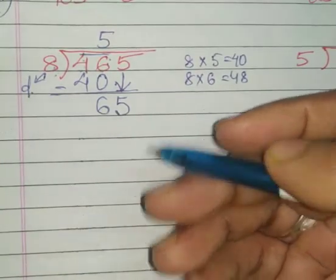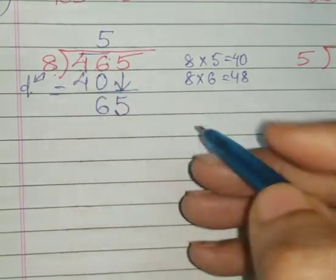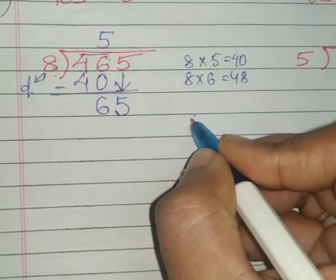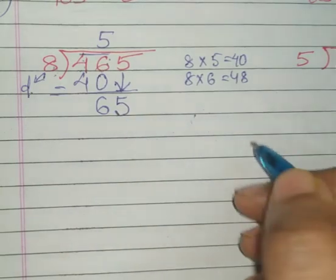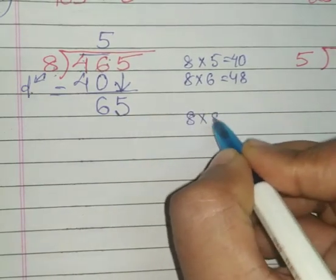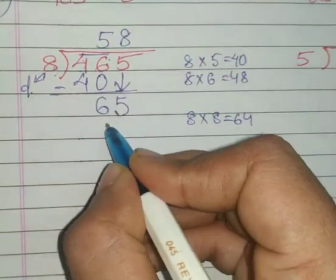Now again look for the 8 table where 65 is there or less than that. If I think for 65, 8 eights are 64, so it is just less than 65, 1 less than 65. 8 eights are 64. Now 8 eights are 64: 5 minus 4 is 1, 6 minus 6 is 0.